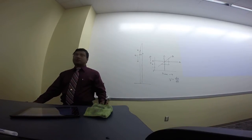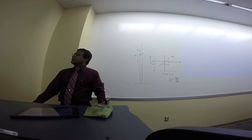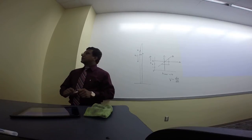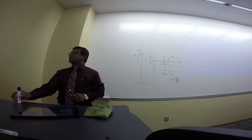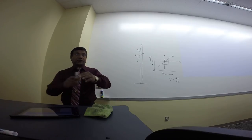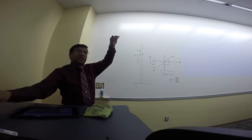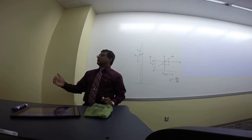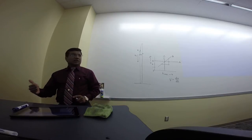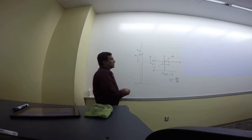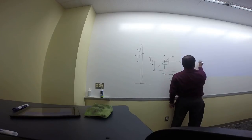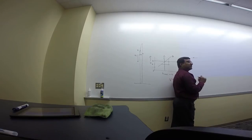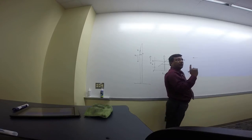Question three: two objects are dropped from a bridge, one second apart. The first is dropped, then after one second the second is dropped. What's happening to the distance between them as each second passes? First, what's the displacement of a freely falling object in one second?